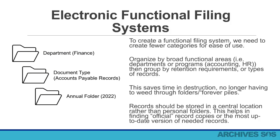To create a functional filing system, we need to create fewer categories for ease of use. Organize by broad functional areas like departments or programs, such as accounting or HR. Then group by retention requirements or types of records. This saves time on destruction, no longer having to weed through folders or forever piles. Records should be stored in a central location rather than personal folders. This helps in finding official record copies or the most up-to-date version of needed records.